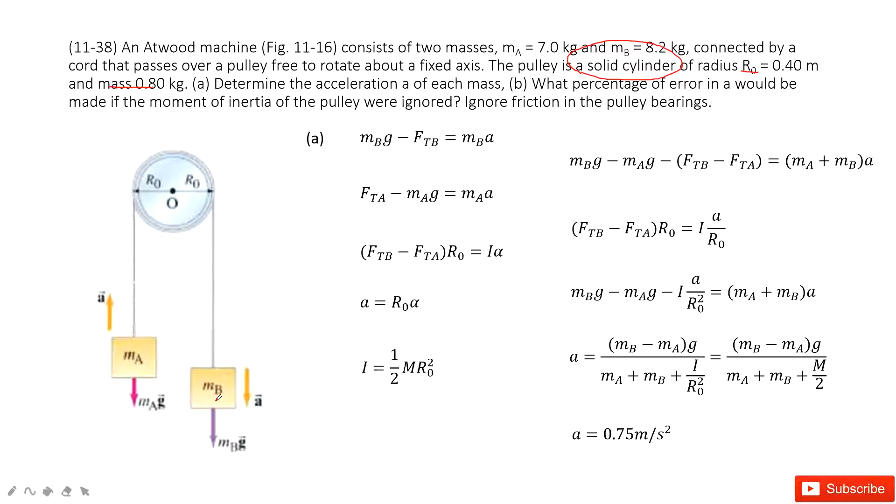So now we can apply Newton's second law on B. For B, we can see the gravity minus the tension. The tension acting on the object is mass times acceleration. This is Newton's second law.